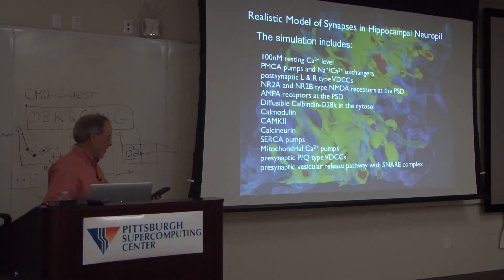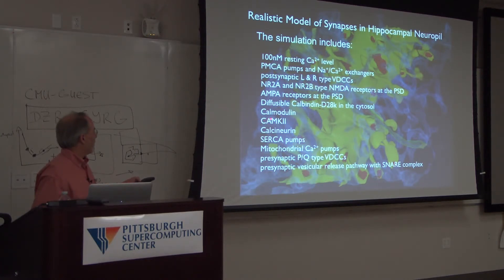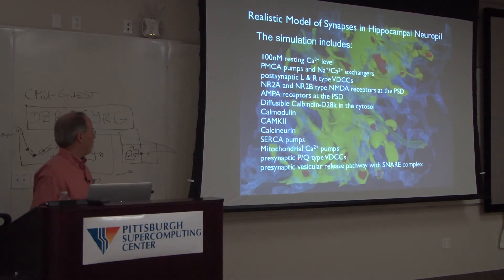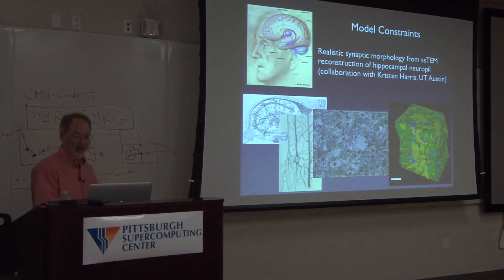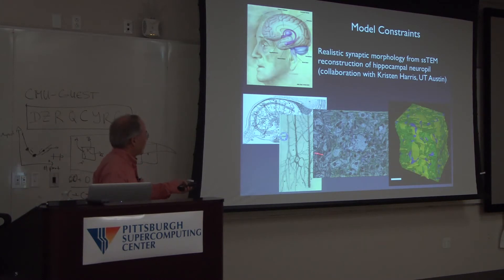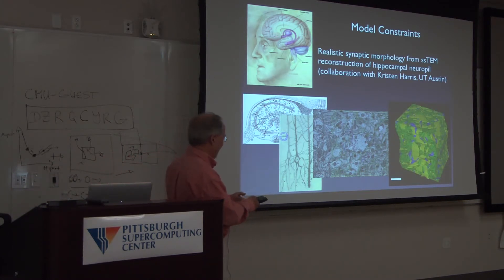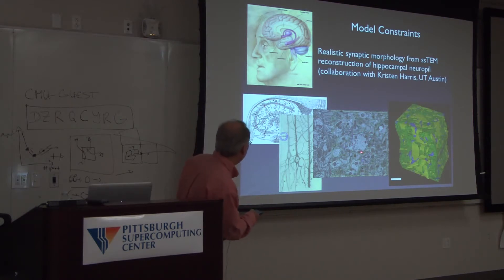In addition to those components, we also have calmodulin and CaMKII, and in this particular model some calcineurin as well, plus mitochondrial calcium pumps. The voltage-gated calcium channels on the presynaptic terminal are the PQ type, and the ones on the postsynaptic side are the L and R type.